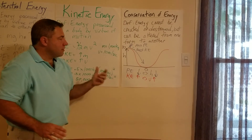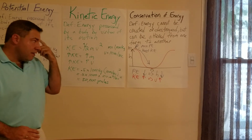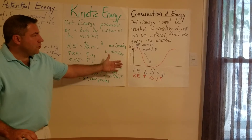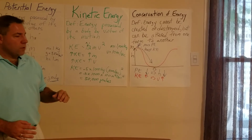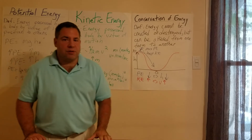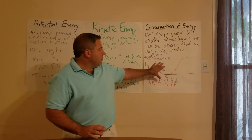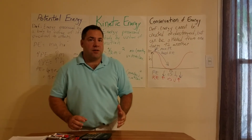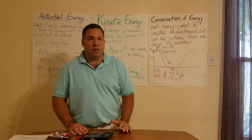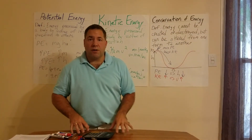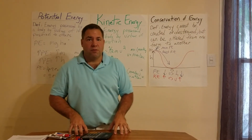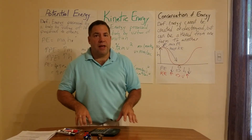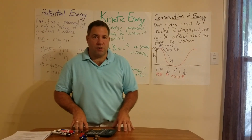You can use the equations to calculate exact values, but for right now I want you to look at the concept: these are related and energy gets transferred. Potential energy goes down and kinetic energy goes up, so the total energy in the system stays the same — and this is assuming no friction. When you have friction, you lose energy. For class tomorrow, think about other things you've used or been on that use this conservation of energy principle. Please review the lesson again if you need to and come prepared with any questions.